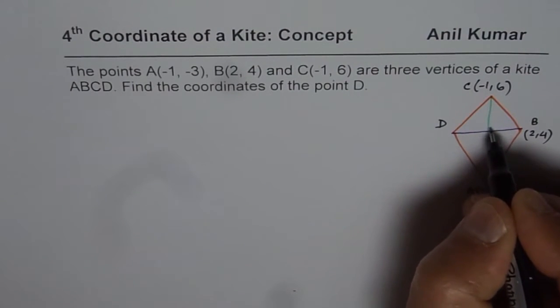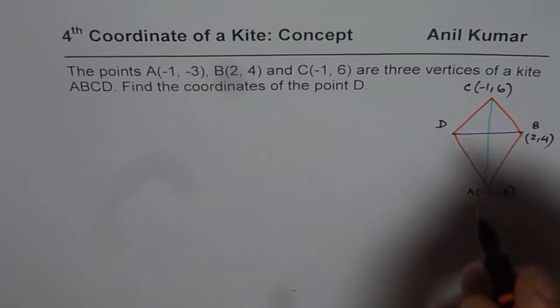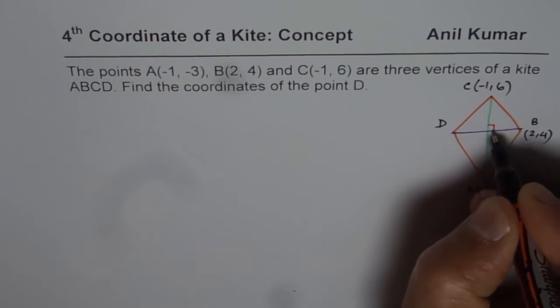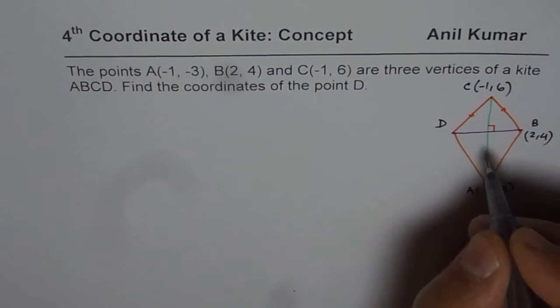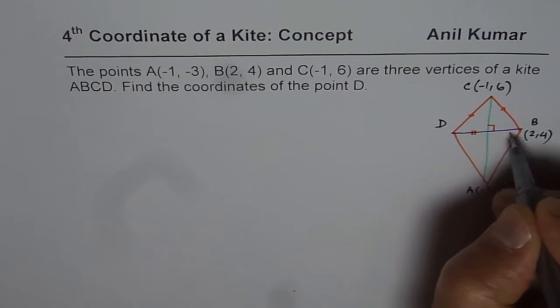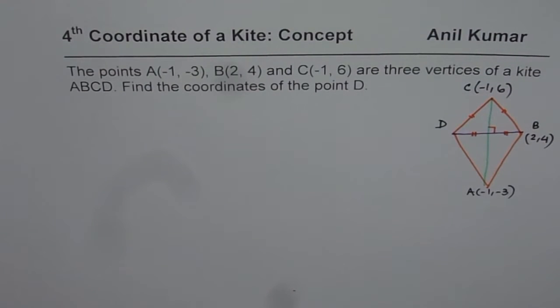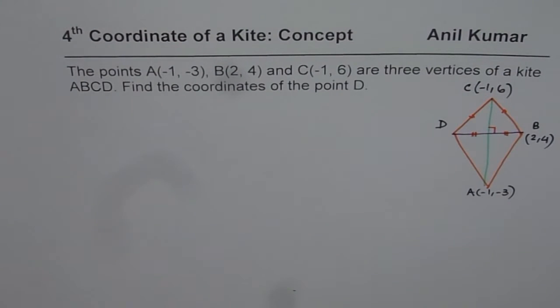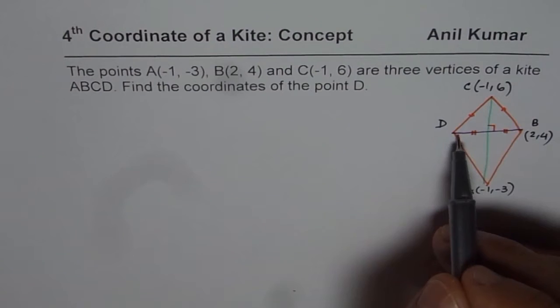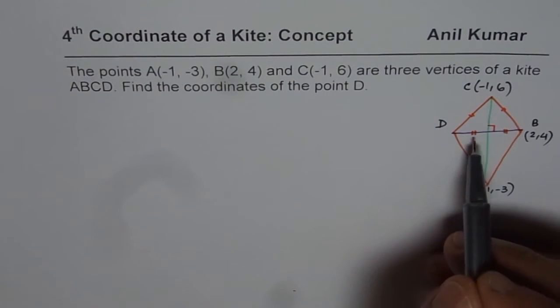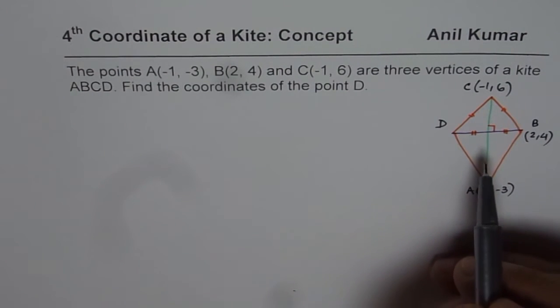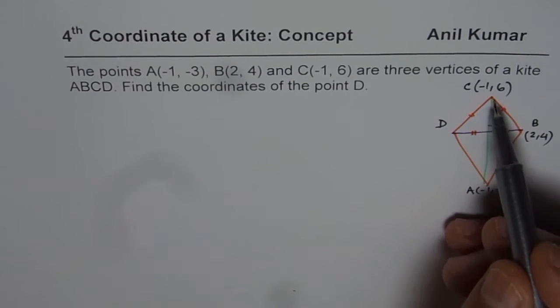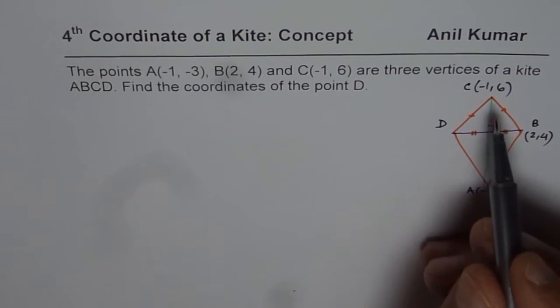So in a kite, what are special things? The diagonals are at right angle, that is, they don't bisect but they are perpendicular. These sides are equal, and in one of these diagonals we have a perpendicular bisector. The longer one bisects the smaller one perpendicularly, so it is a right bisector.